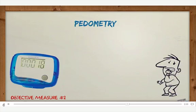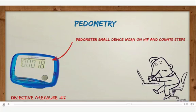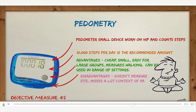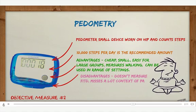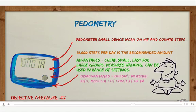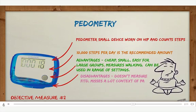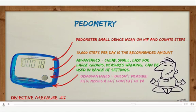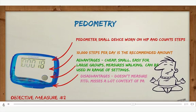The second objective measure is pedometry. Pedometers are small devices worn on the hip that count your steps — 10,000 steps is the general recommended amount. They're cheap, small, easy for large groups, measure walking, and can be used in a range of settings. However, they don't record frequency, intensity, type, or duration, and they miss a lot of the context of what your physical activity actually involves. You only get one figure out of it.